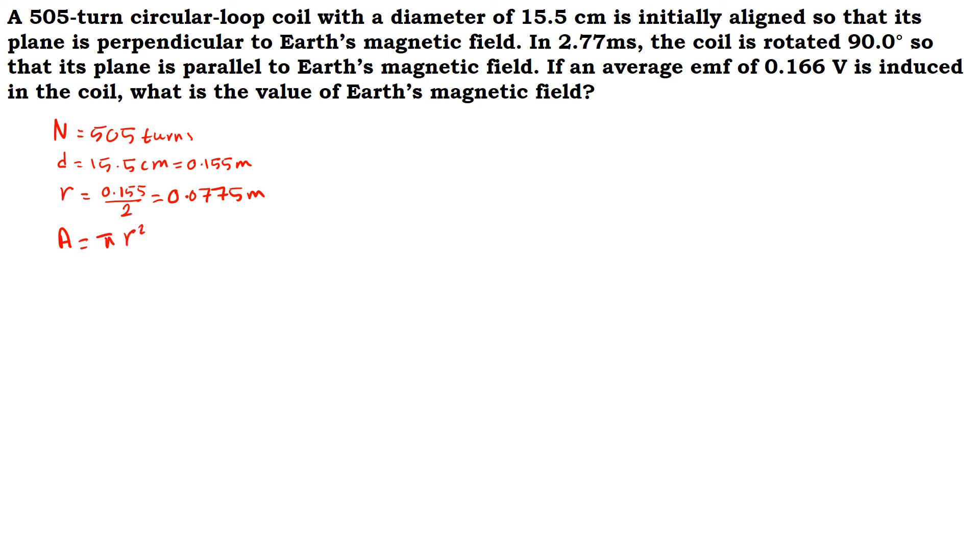Since it is a circular loop, from the radius we can find the area, which is pi r squared. So the area is pi into 0.0775 squared. The answer, the area, will be 0.019 square meters.